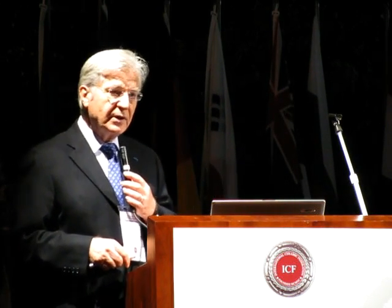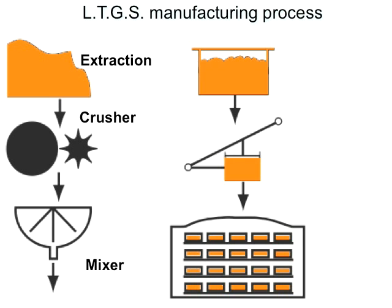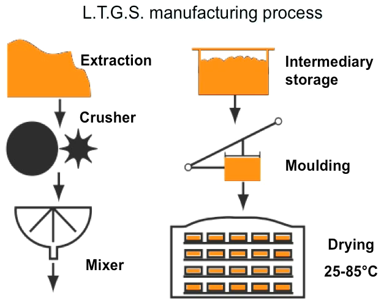The manufacturing of the material is very easy. We start with the extraction of the material, crush, mix, let it store for at least 1 or 2 days at room temperature. Then mold, compress, and let it dry either at 25 to 85°C or at higher temperature.